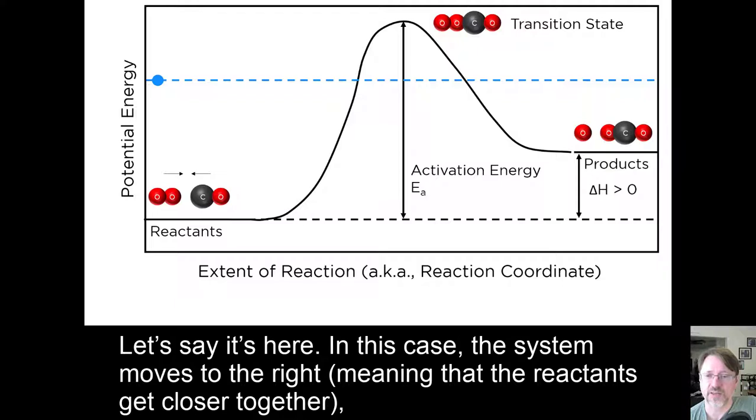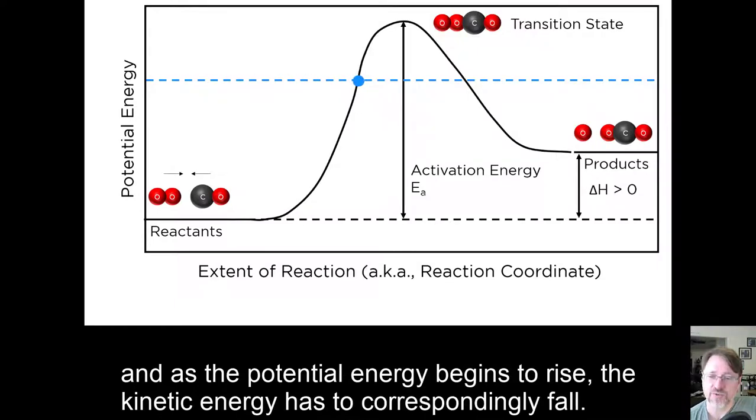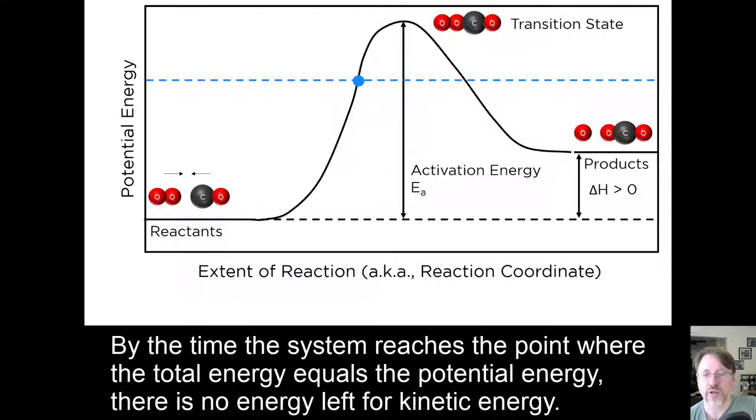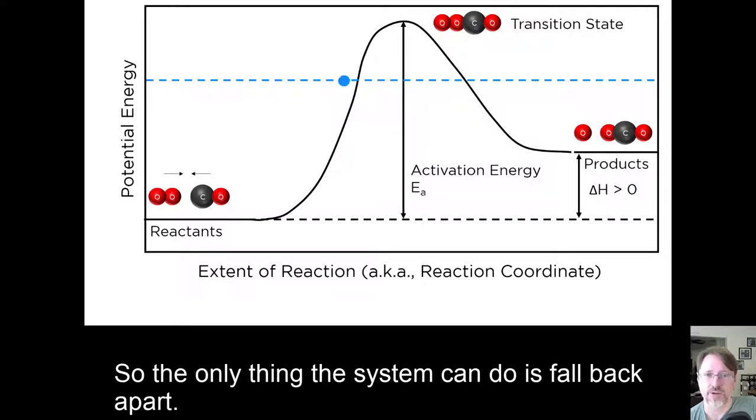In this case, the system moves to the right, meaning that the reactants get closer together. And as the potential energy begins to rise, the kinetic energy has to correspondingly fall. By the time the system reaches the point where the total energy equals the potential energy, there's no energy left for the kinetic energy. So the only thing the system can do is fall back apart.